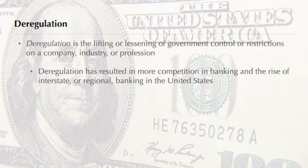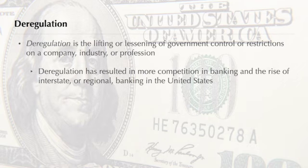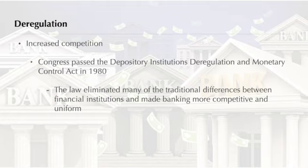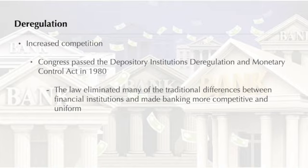The second major trend is deregulation — the reduction of government restrictions. Deregulation has resulted in more competition in banking as well as the rise of interstate or regional banking in the United States. Banking deregulation began in 1980 when Congress passed the Depository Institutions Deregulation and Monetary Control Act. This act eliminated many of the traditional differences between financial institutions such as commercial banks and S&Ls, making banking both more competitive and more uniform in the services offered, particularly regarding interest rates, checking accounts, and required reserves.